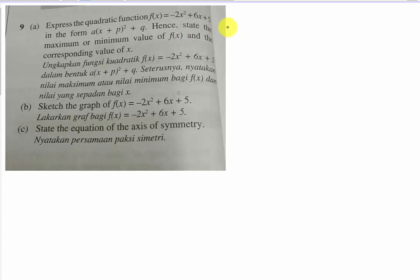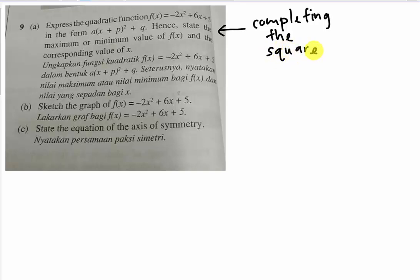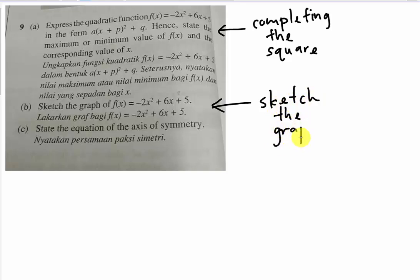For the first part, you have to do completing the square. I hope you understand how to do completing the square — if not, you can find my video about completing the square. The second part, you have to know how to sketch the graph. And the last part, you have to know how to find the axis of symmetry.